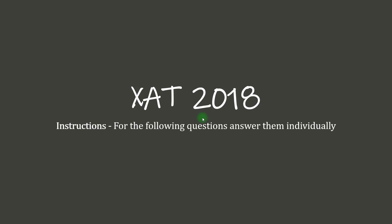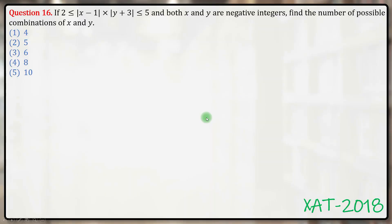Hello everyone, let us get on with this question of XAT 2018. If mod of x minus 1 times mod of y plus 3 lies between 2 and 5 and both x and y are negative integers, find the number of possible combinations of x and y.